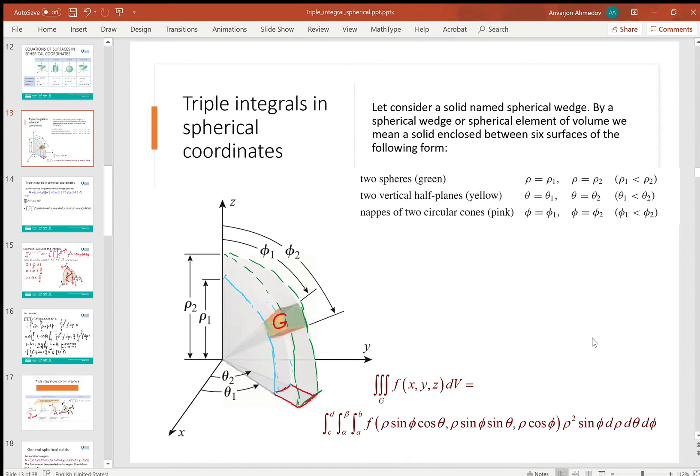two vertical half-planes θ equals θ₁, θ equals θ₂, and two circular cones. In this case, the triple integral of the function over the solid G can be calculated by replacing x, y, z with their spherical values and multiplying the value of the function by the Jacobian of the transformation of spherical coordinates, and